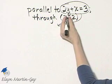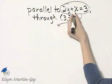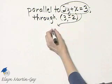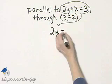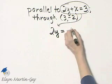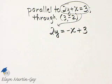So to solve this equation for y, I'll begin by subtracting x from both sides. If I subtract x on the left side, I have 2y. If I subtract x on the right side, I'll have negative x plus 3.